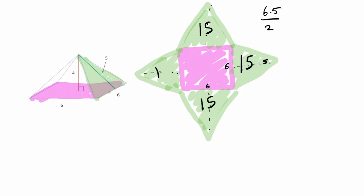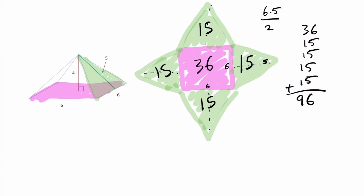The height of each triangle going up is five, and all four triangles are going to be the same. To find the area, it's base times height divided by two for each triangle: 6 times 5 divided by 2 equals 15. So each triangle has an area of 15. The square inside is 6 by 6, giving an area of 36. To find the surface area, add them together: 36 plus 15 times 4 equals 36 plus 60, which gives us 96 square units as our surface area.